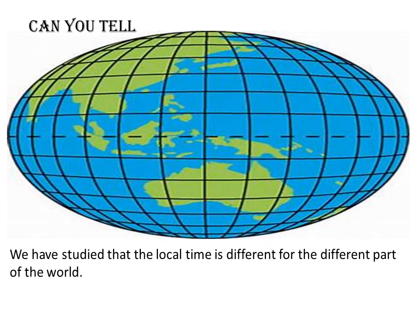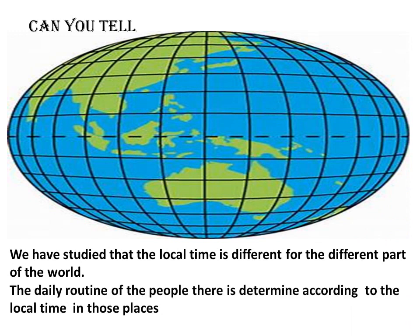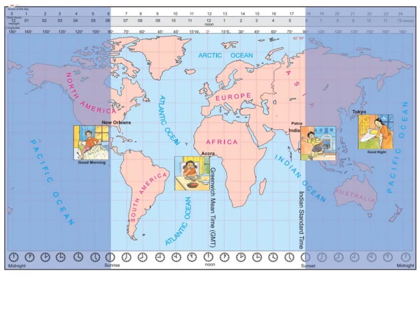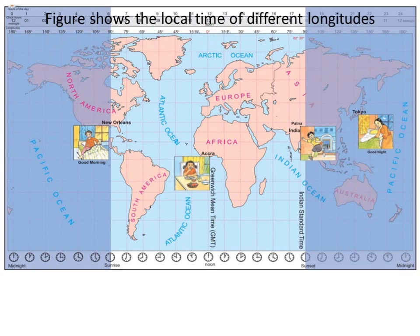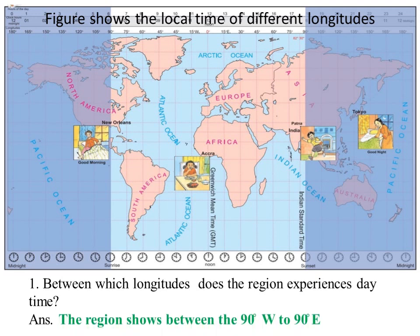We have studied that the local time is different for different parts of the world, and the daily routine of people is determined according to the local time in those places. In your book, a map has been given showing the local time of different longitudes. Study this map and answer the following questions, using the relation between degrees and time. Question 1: Between which longitudes does the region experience daytime? The region between 90 degree west to 90 degree east experiences daytime.